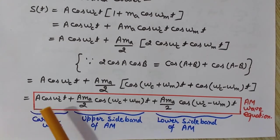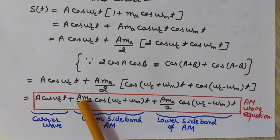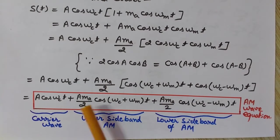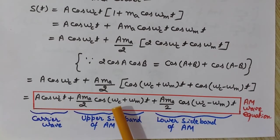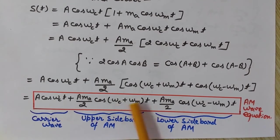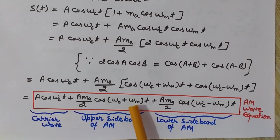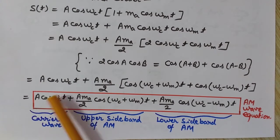The upper and lower sidebands are named based on their frequency components. The carrier wave has amplitude A at frequency ωc. The upper sideband has amplitude A·ma/2 at frequency ωc+ωm (increased by ωm), and the lower sideband has amplitude A·ma/2 at frequency ωc−ωm (reduced by ωm). Both sidebands have equal amplitudes and are situated on either side of the carrier frequency ωc.